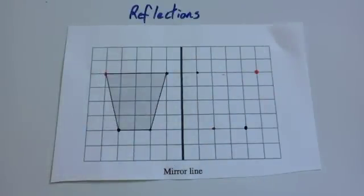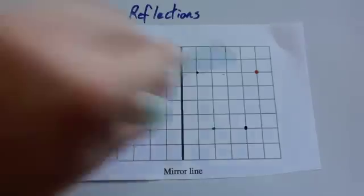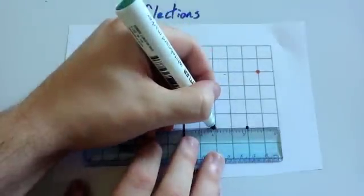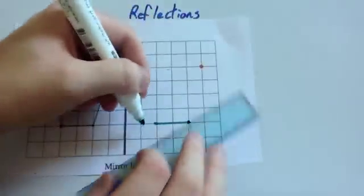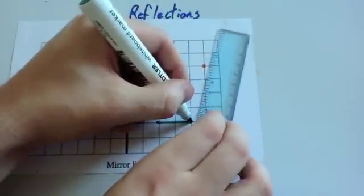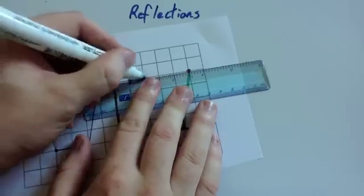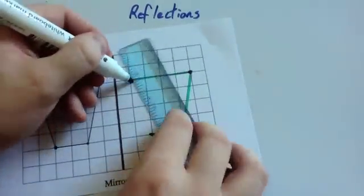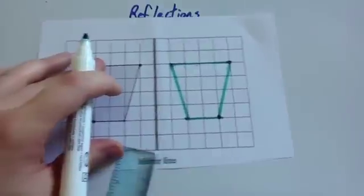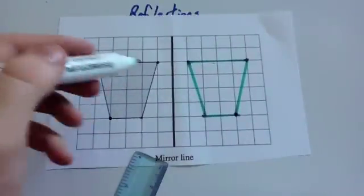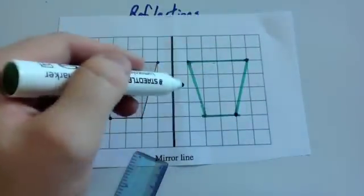All that's left for you today is to join that up using your ruler. And there you've reflected the object in the mirror line to get your image.